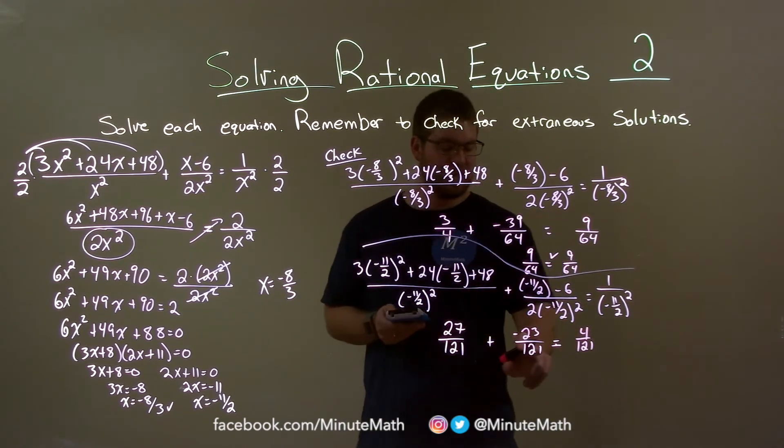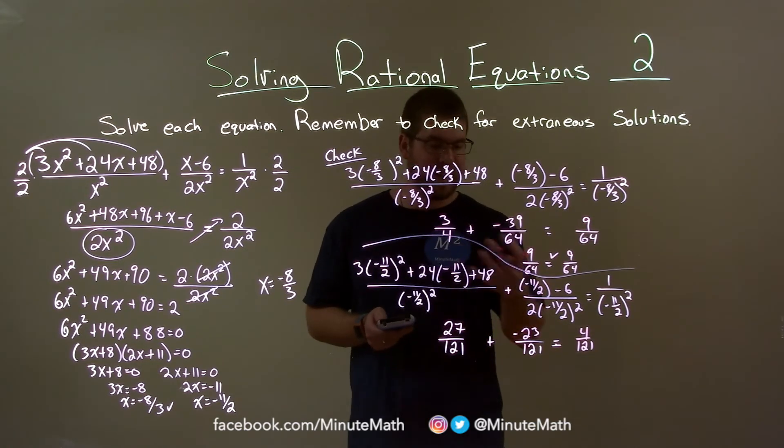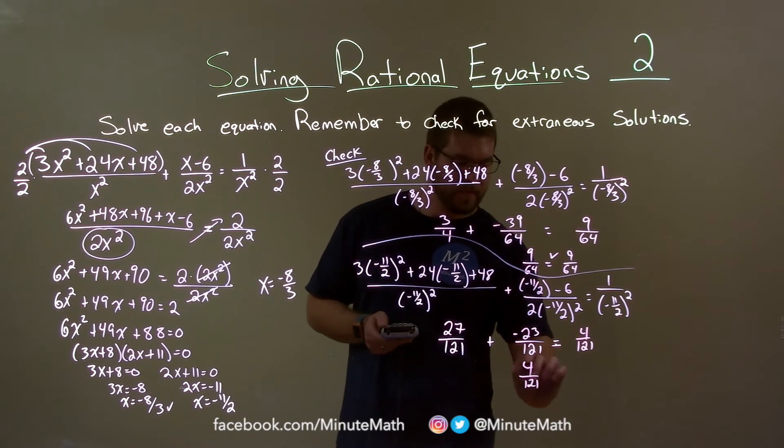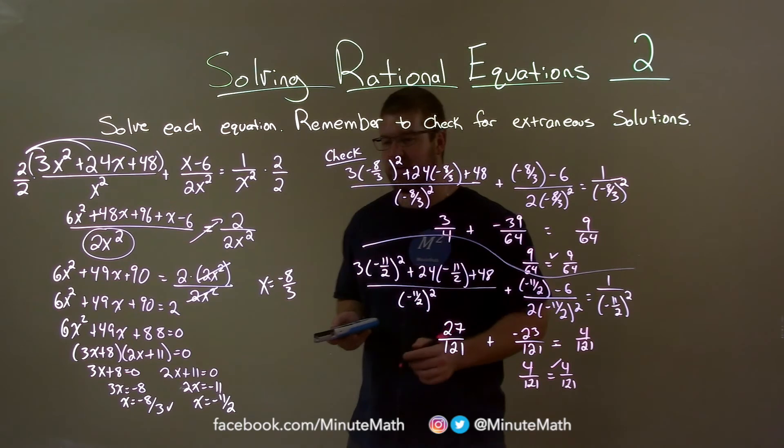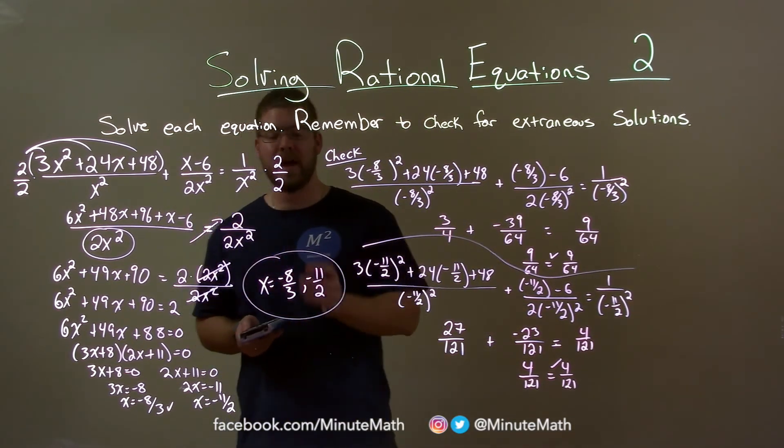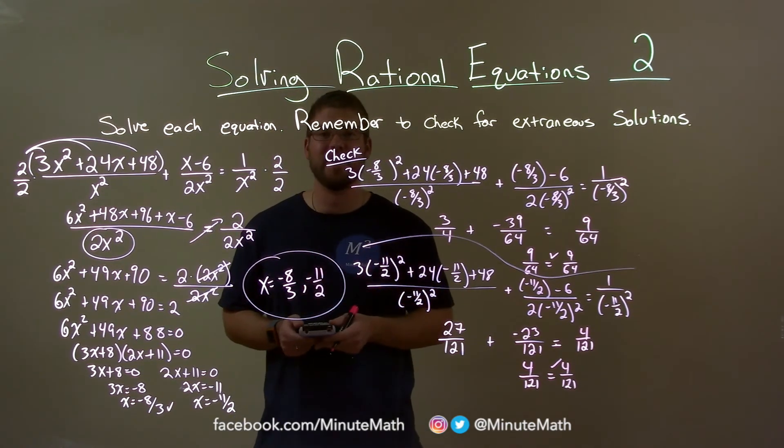And we can see that, right? Same denominator. Subtract the numerators: 27 minus 23, plus a negative 23 is 4. So 4 over 121 equals 4 over 121. So negative 11 halves is a solution. And so my final answers here are x equals negative 8 thirds, and x equals negative 11 halves.